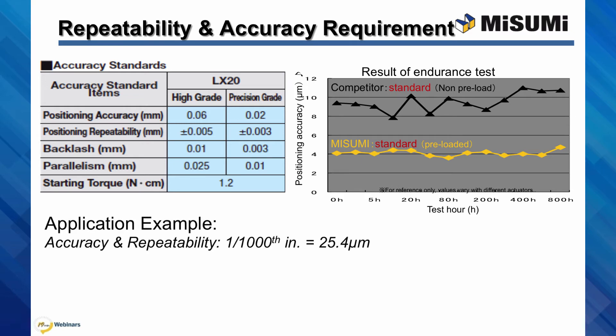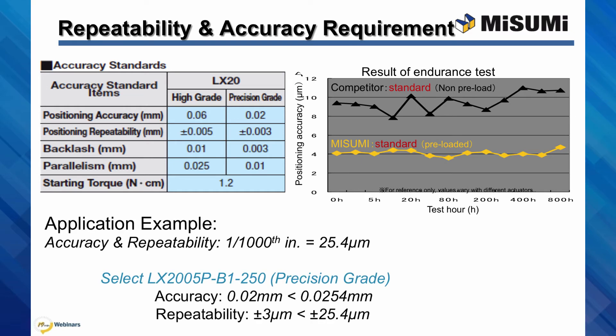When comparing the high grade and precision grade LX20 specs, we see that for our application example — which requires 1/1,000th of an inch or 25.4 microns accuracy and repeatability — the precision grade is a better fit than the high grade, due to the increased positioning accuracy of 20 microns and the very fine repeatability of plus or minus 3 microns.